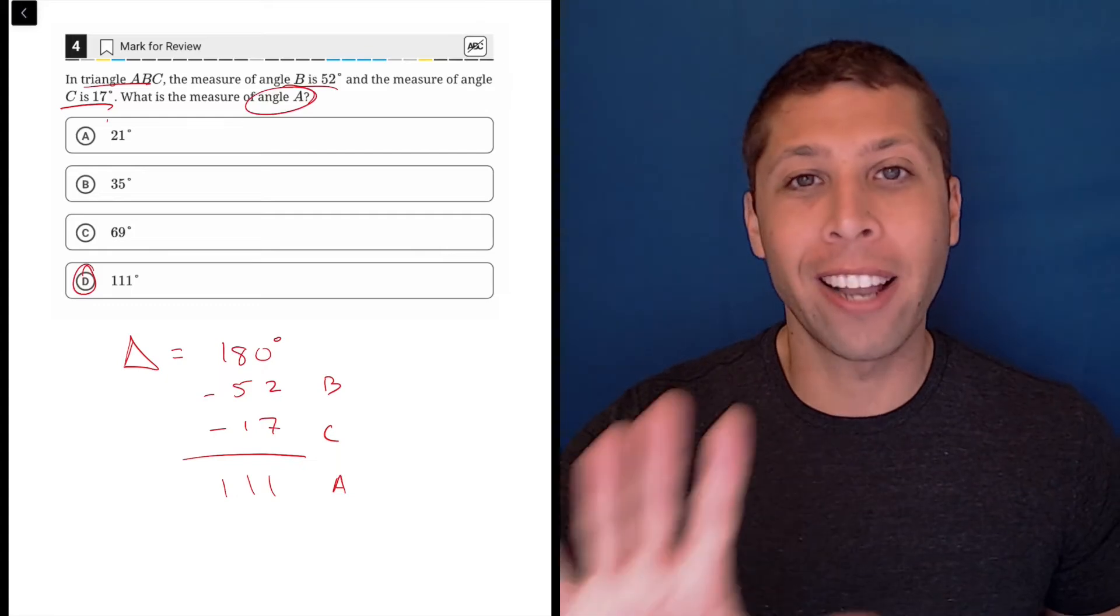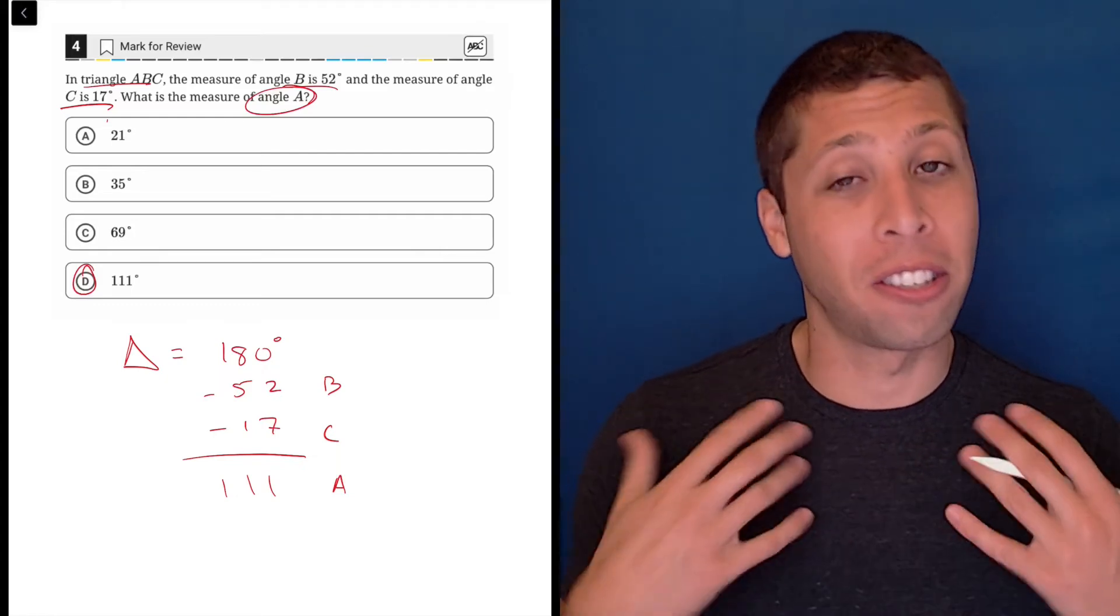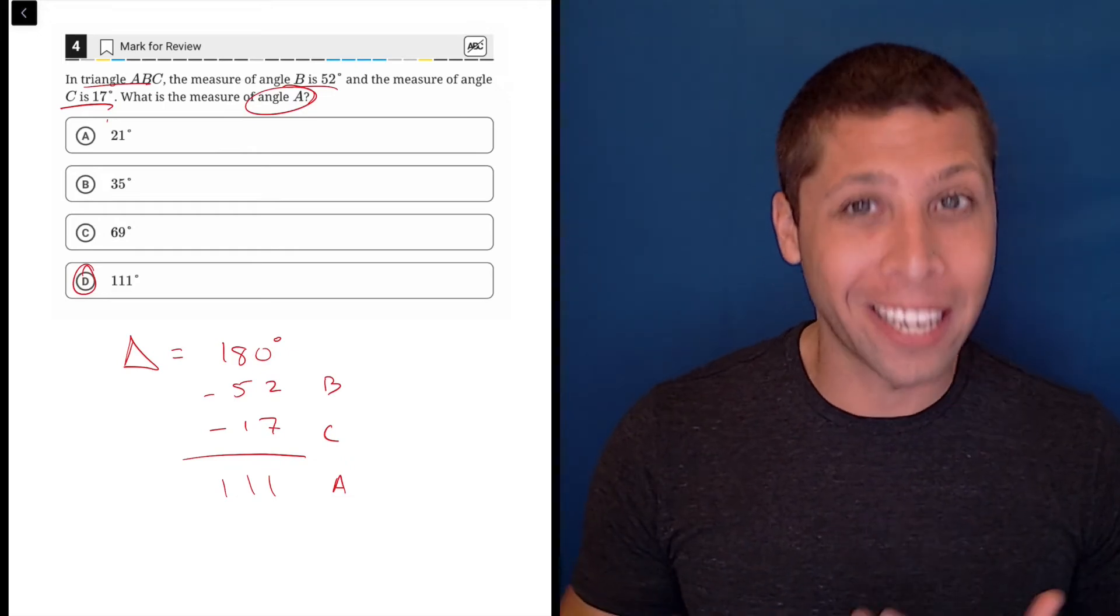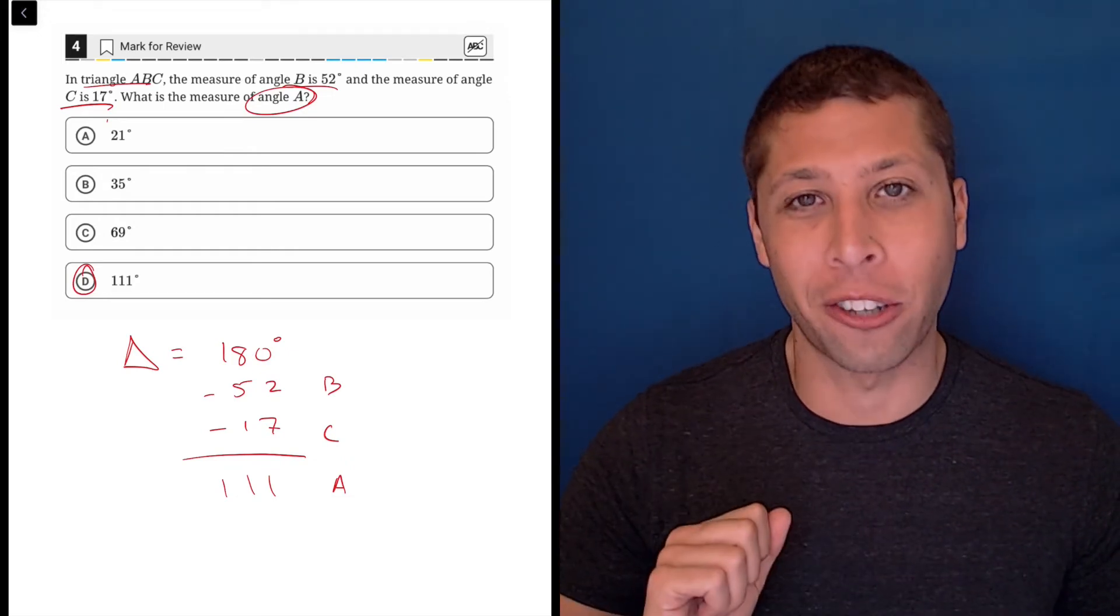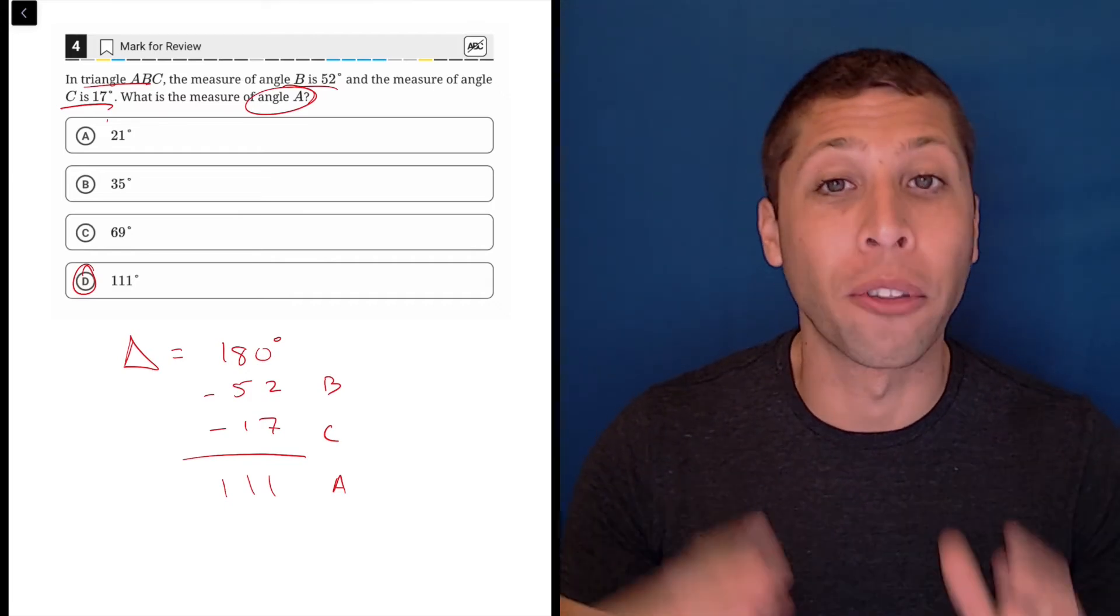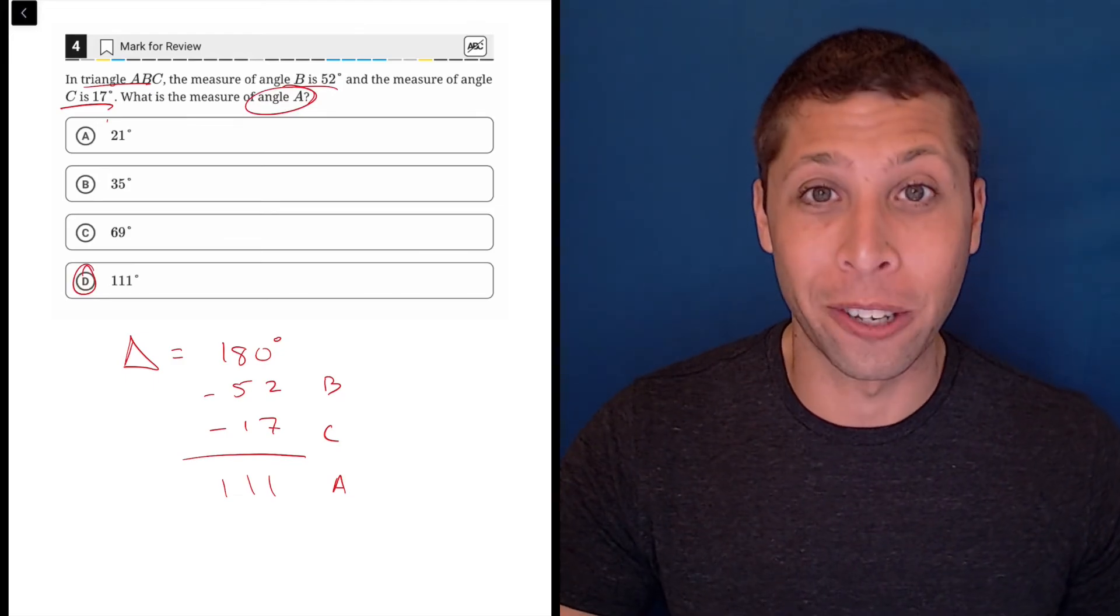So please, please, please do not get this kind of geometry stuff wrong, even if you hate geometry. Some of it is just a simple fact, a little arithmetic, and remember, you do have that chart. It tells you that there are 180 degrees in a triangle in the reference chart that you'll get both in the digital version of the exam and the paper and pencil version. So there's really no excuse here.